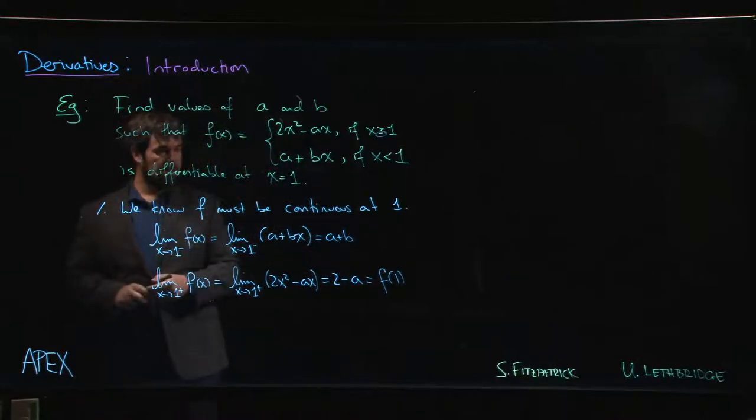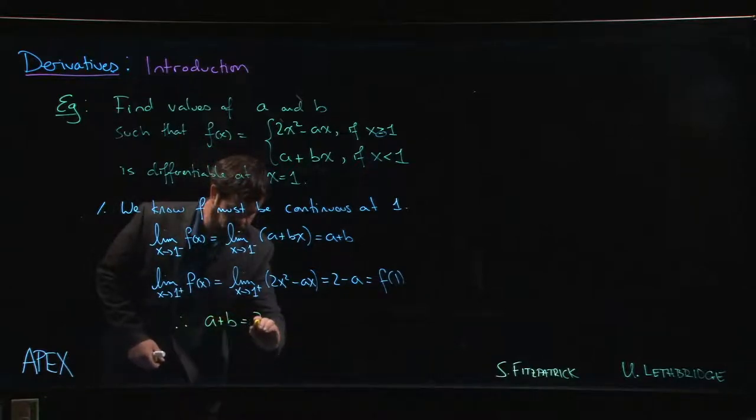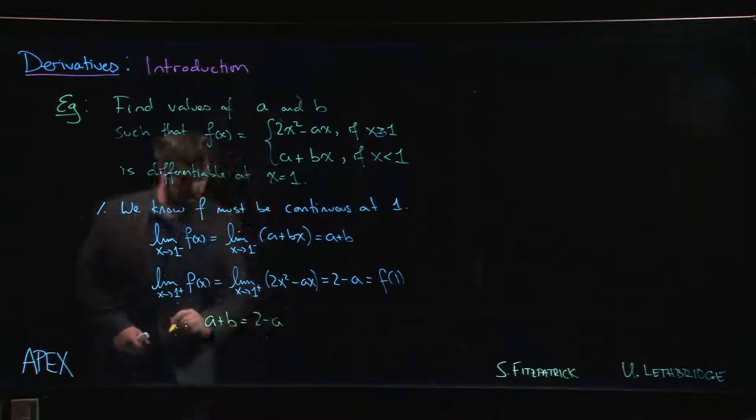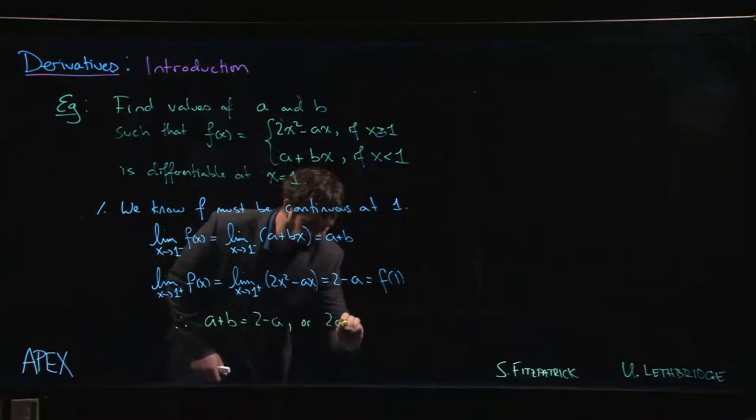We need these two to be equal if our function is continuous, so that means we must have that a + b has to equal 2 - a, or maybe if we like we should write this as 2a + b must equal 2.